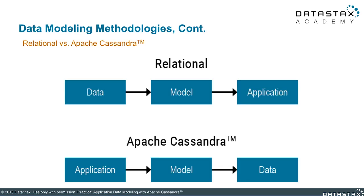Here's a quick summary of the differences in the approaches. In the relational approach, you begin with the data, create a data model, and then you think about your application. The Cassandra approach is kind of like that in reverse. You think about the needs of the application first and use that to derive the model.